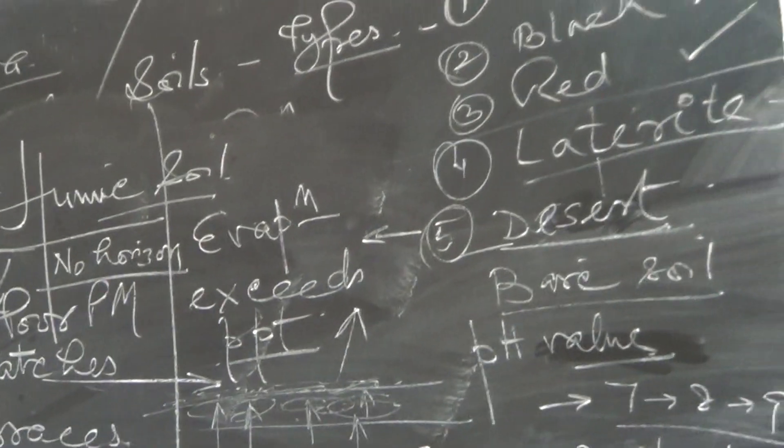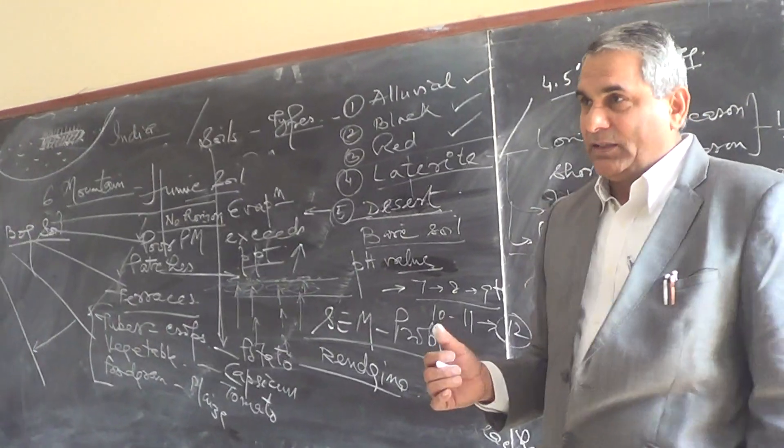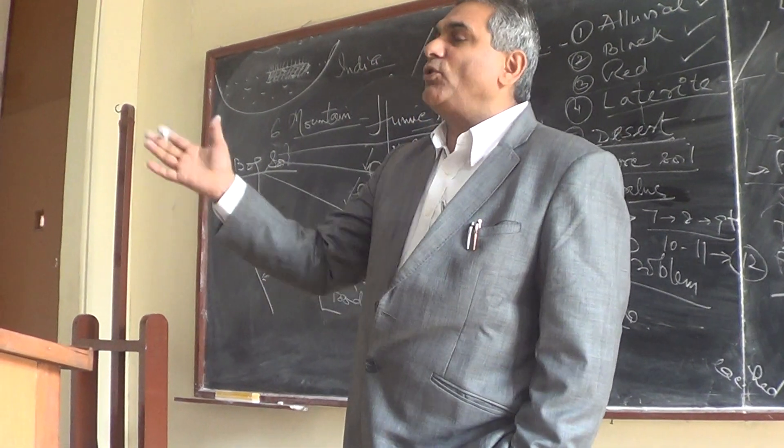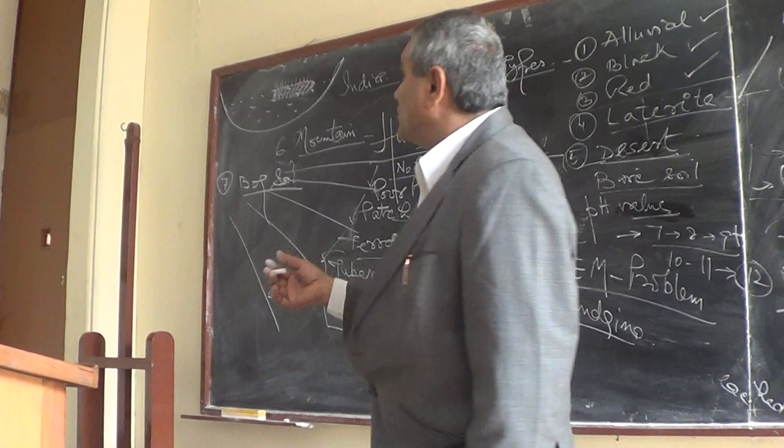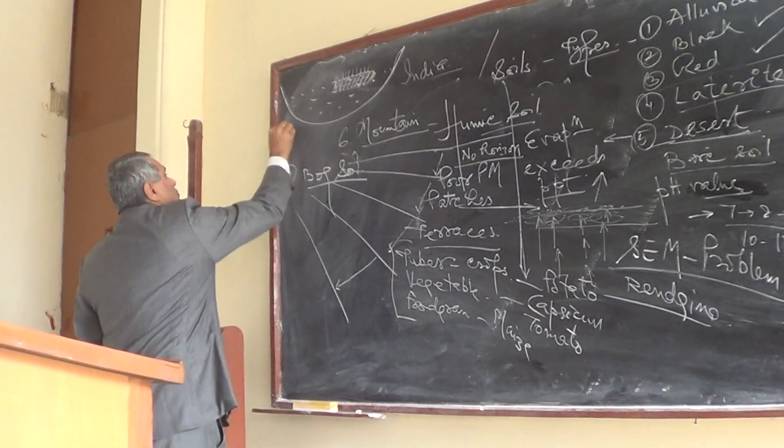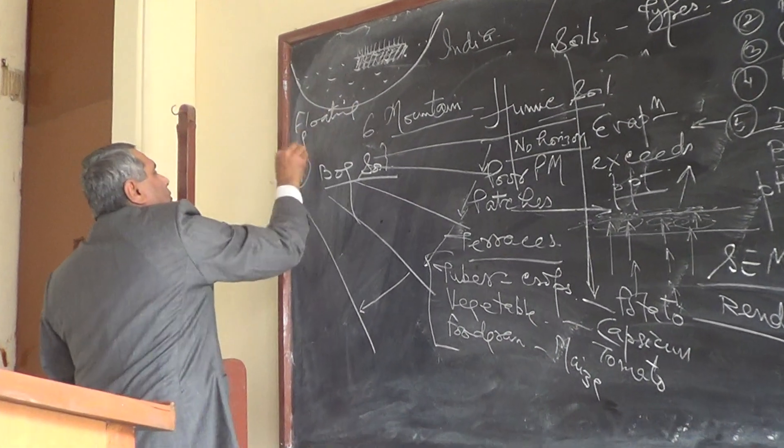Such type of soil is called bog soil, like Dal Lake in Kashmir or Loktuk Lake where floating fields are found. We call this type of soil floating field.